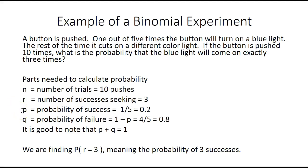P is the probability of success. Here the light comes on 0.2 or 20% of the time. Q is the probability of failure. This means no blue light. If the light comes on 20% of the time, then it does not come on the other 80% of the time.